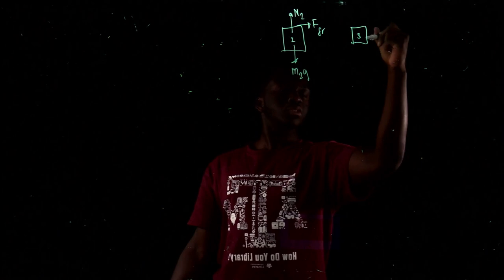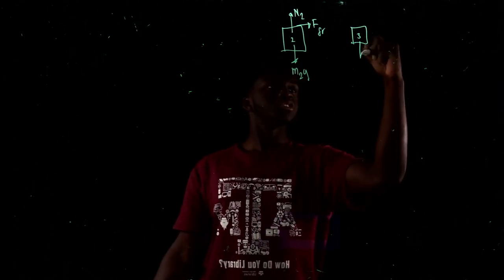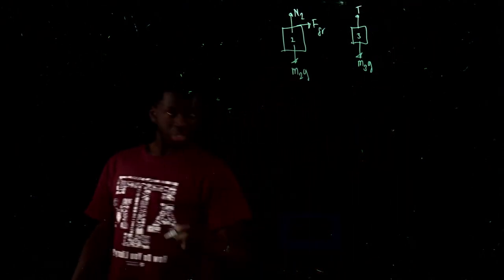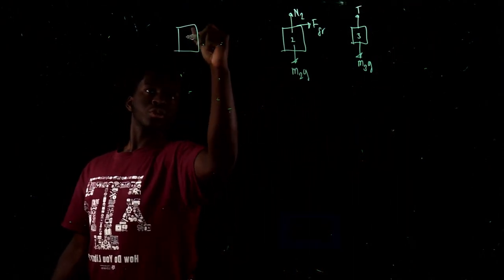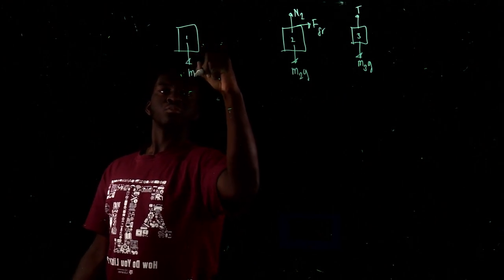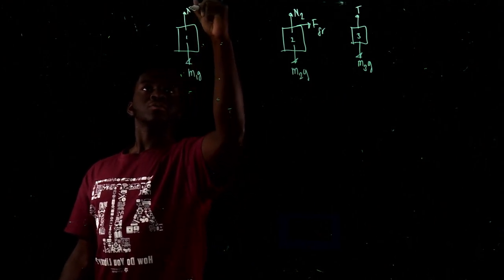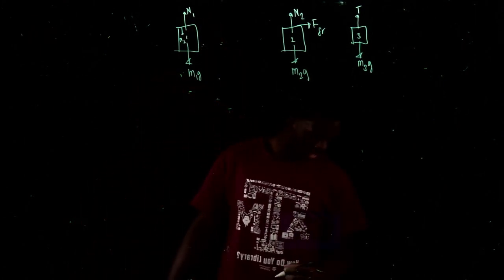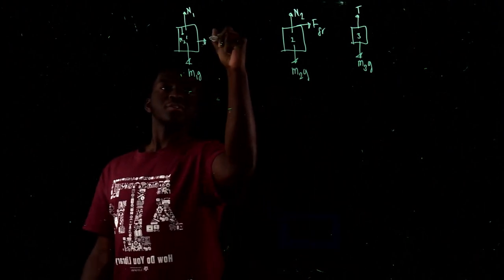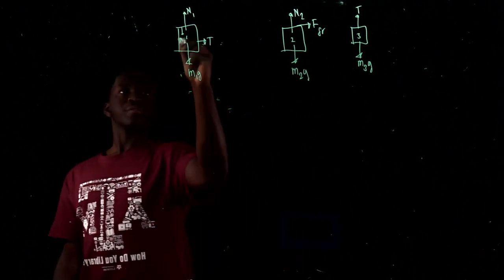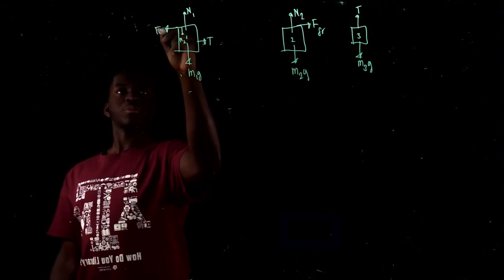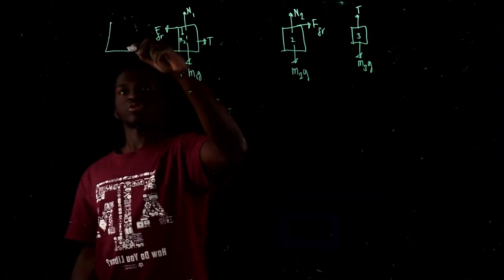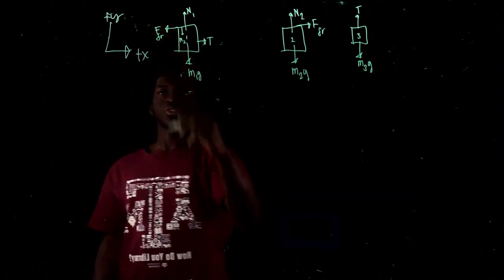Then we have block 3, which is just M3G and tension. And then block 1 — you have M1G, N1, then N2 coming down on it, then the tension force being pulled that way, and then force of friction the opposite way for static friction. And those are all the forces. For our coordinate system, there's going to be plus X and plus Y. For block 3, we're going to do it down as plus Y.